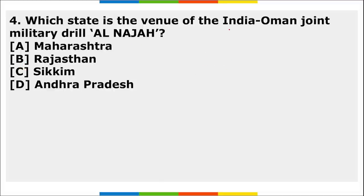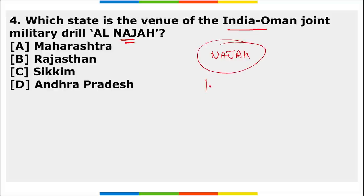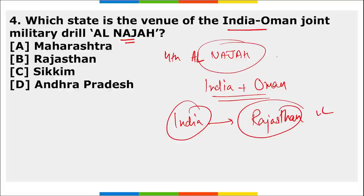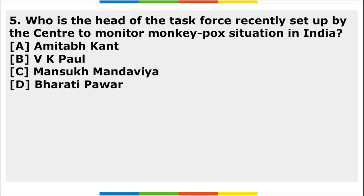Next MCQ: Which state is the venue of the India-Oman joint military exercise Al-Najah? The answer is Rajasthan. This exercise was conducted between the armies of India and Oman. It is the fourth edition of Al-Najah and will be a 13-day-long joint military exercise held in Rajasthan, India.